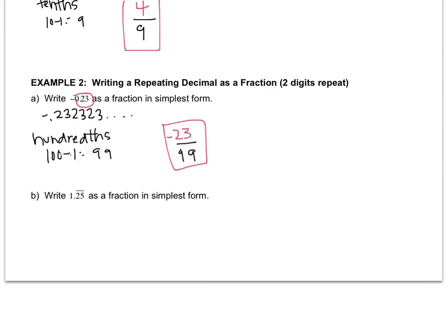So negative 23 over 99 is the answer. And you can go into your calculator, grab your calculator, and check. 4 divided by 9 is 0.44444 repeating. 23 over 99 is 0.232323 repeating. So you can confirm these in a calculator if you'd like, and I would encourage you to do so.